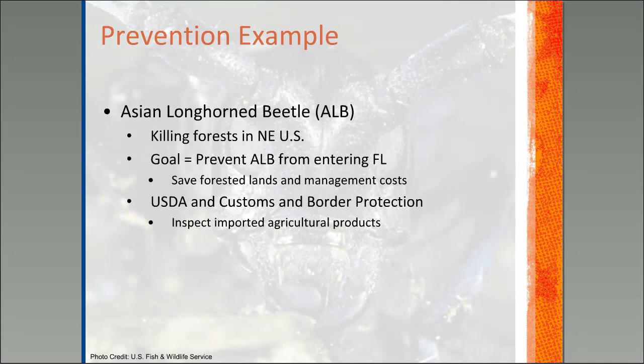One example of prevention is the Asian longhorn beetle. This beetle's larvae bore into trees and can ultimately block the flow of water and nutrients, killing the trees and causing devastation of forests in the northeast. Our goal in Florida is to prevent this beetle from entering to save our forested lands. The USDA and Customs and Border Protection are helping accomplish this by inspecting imported agricultural products to make sure this beetle isn't being brought in.